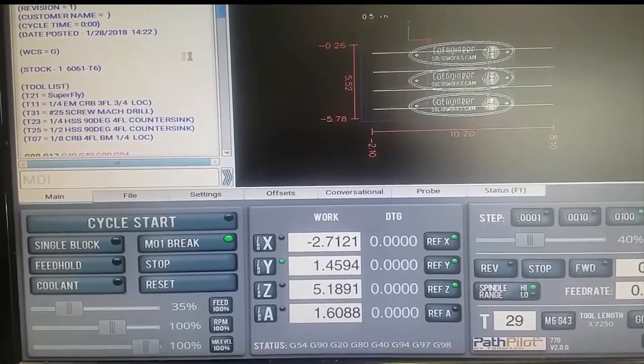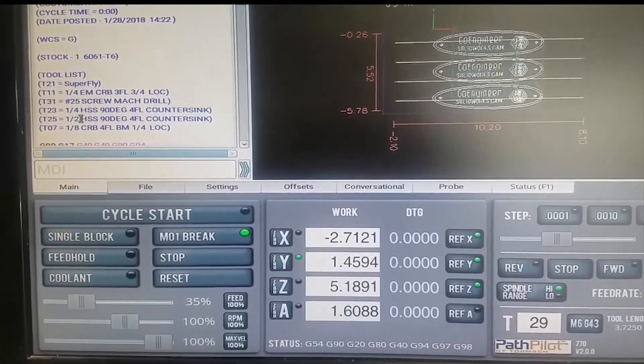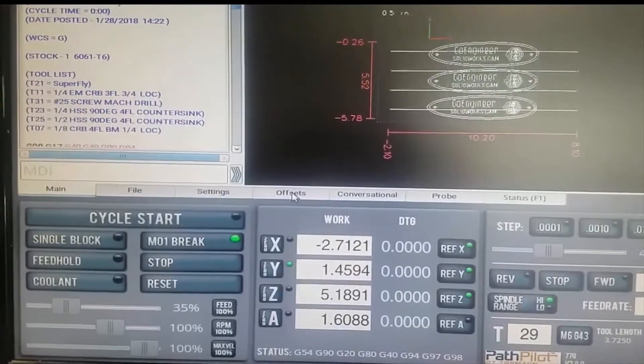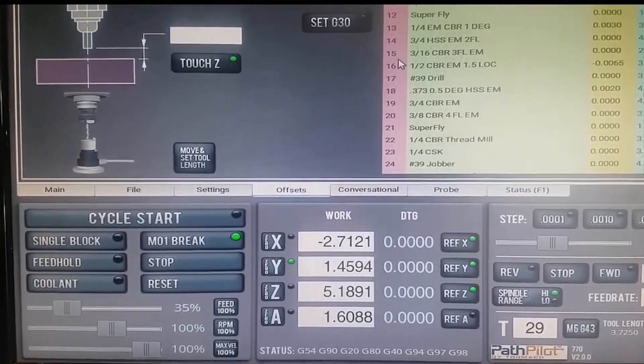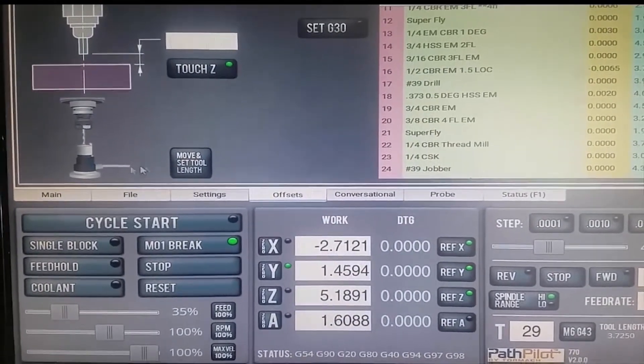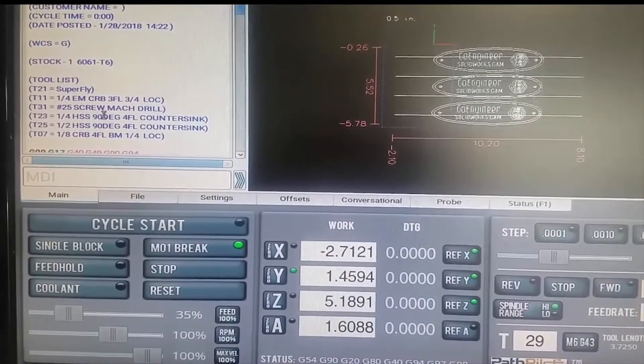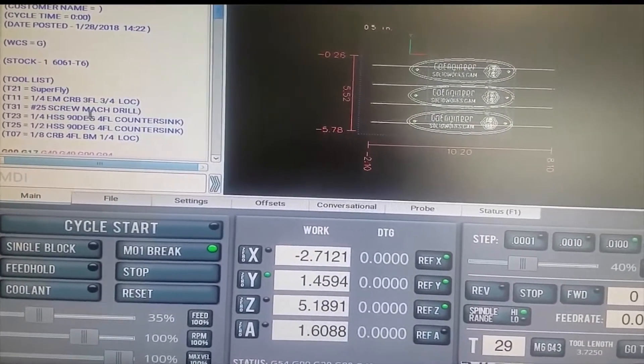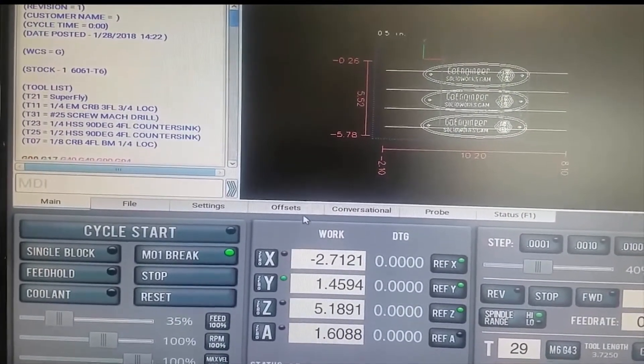First things first, our program tells us what tools are needed in the setup list here. So what I need to do is go to my offsets in my PathPilot program to make sure that everything listed with the proper T callout tool number matches the tools here and also has the right height offset so that I don't run the tool into my table.